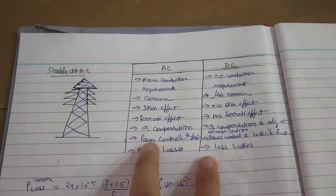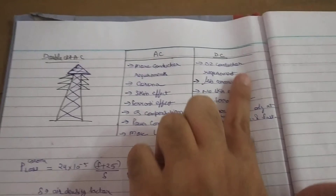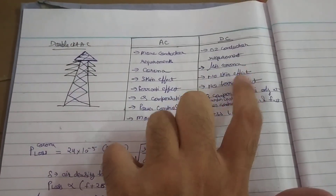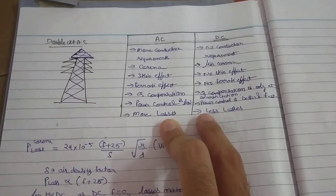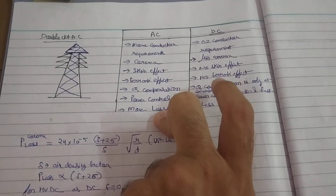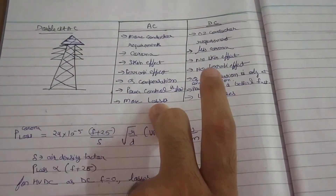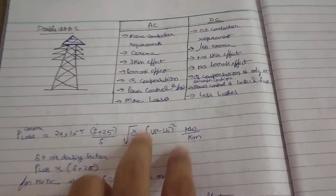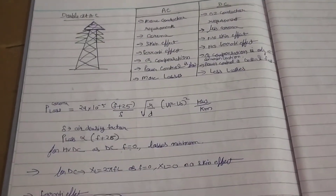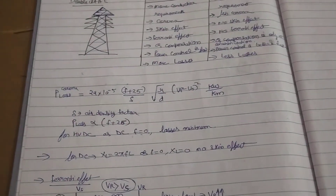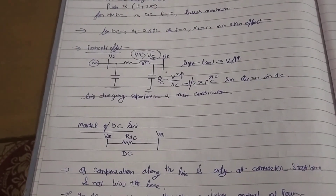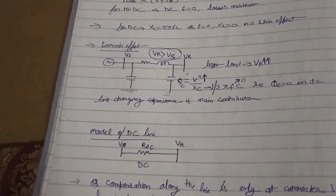So the HVAC and HVDC system comparison shows which is good and which is bad. The DC system is good for long-distance transmission: two conductors, less corona, no skin effect, no Ferranti effect, less reactive power compensation needed, and less losses in DC. So we can say HVDC is best for long-distance transmission lines. Here I end this lecture — continue in my next lectures. Thank you so much.